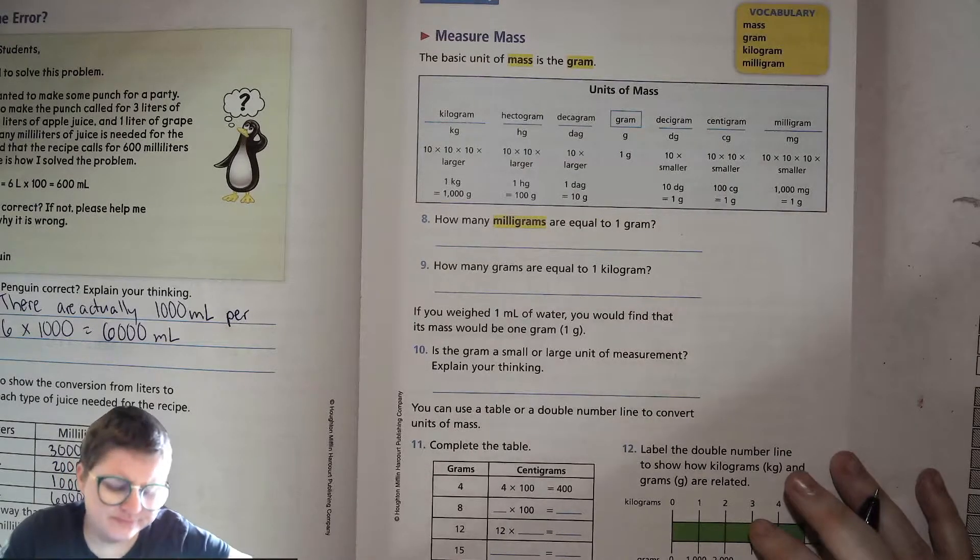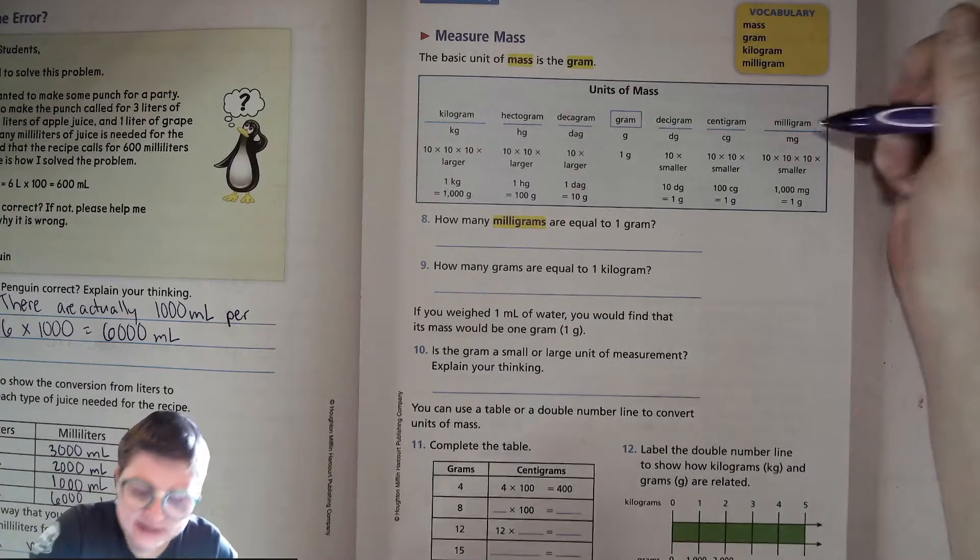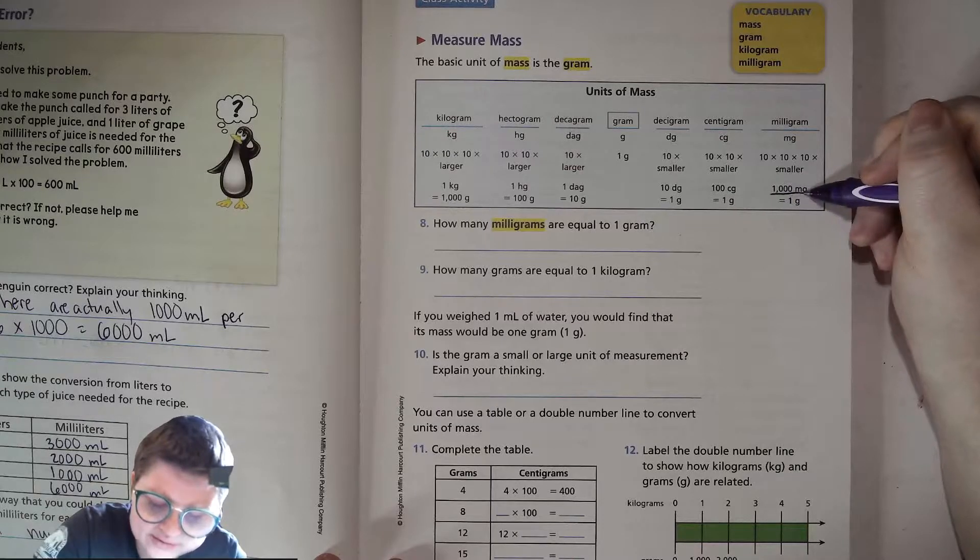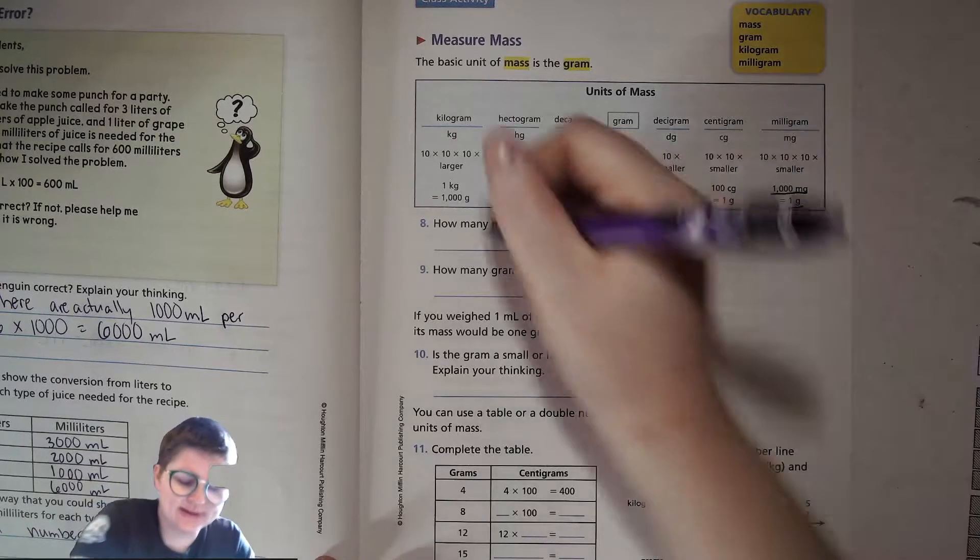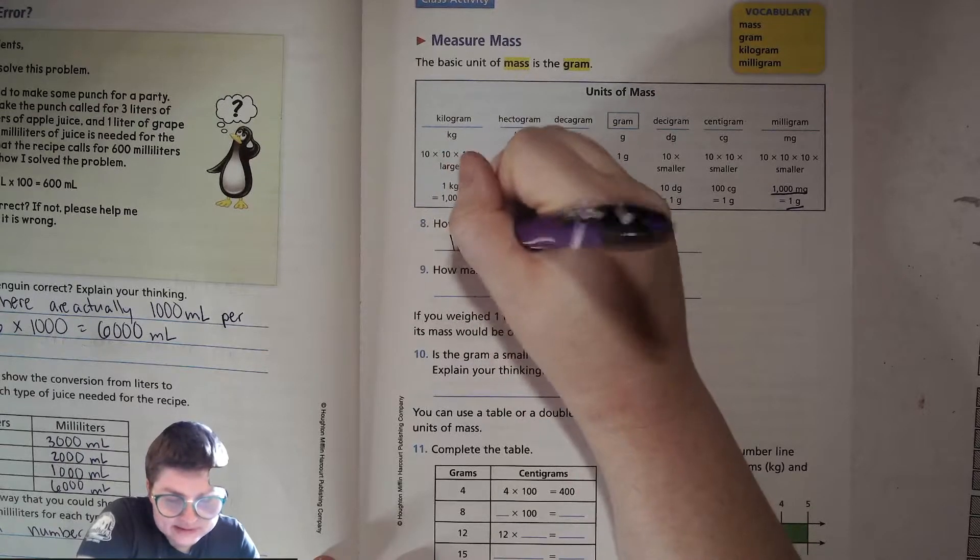How many milligrams are equal to one gram? A milligram is a 1000th of a gram. So there are 1000 milligrams in one gram. 1000 milligrams.